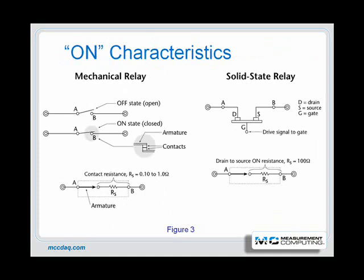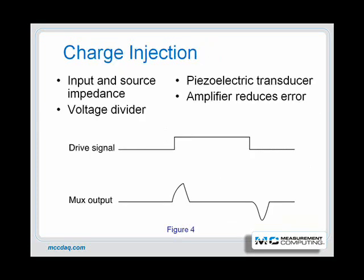Another characteristic that varies between mechanical relays and solid state switches is called on resistance. An ideal mechanical switch or relay contact pair has zero on resistance, but real devices such as common relay contacts are 10 milli-ohms or less. A quality analog switch can be 10 to 100 ohms, and an analog multiplexer can be 100 to 2,500 ohms per channel. The on resistance adds directly to the signal source impedance and can affect measurement accuracy if not compensated.